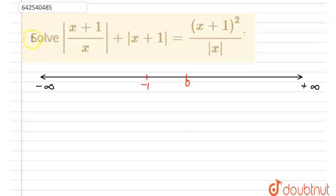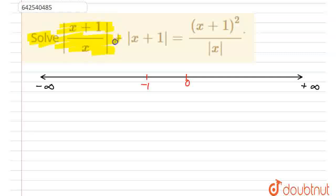Hello, let's start this question. This question says: solve |x+1/x| + |x+1| = (x+1)² / |x|.